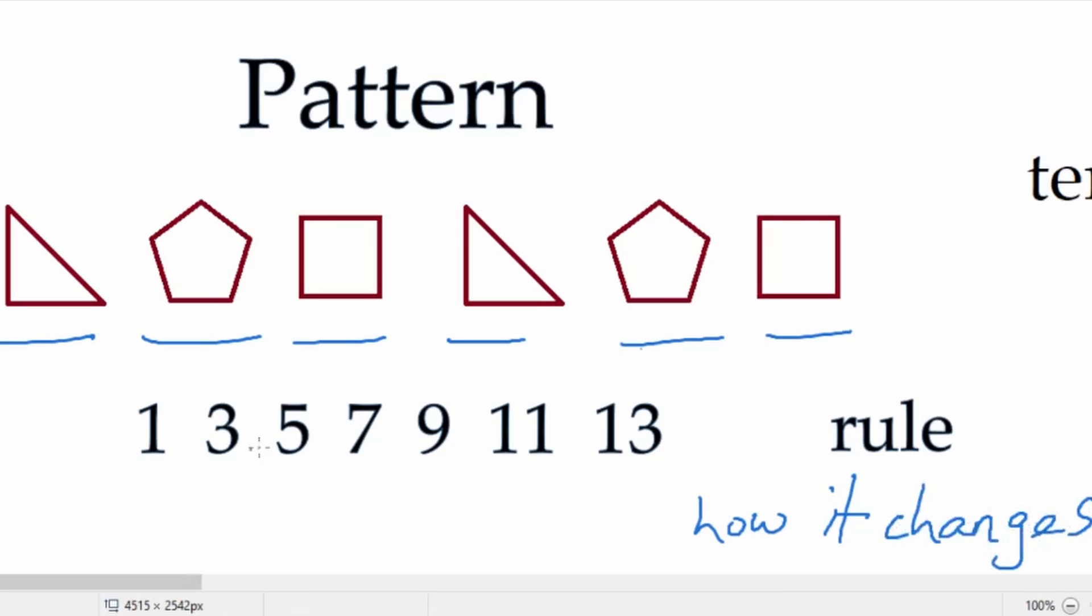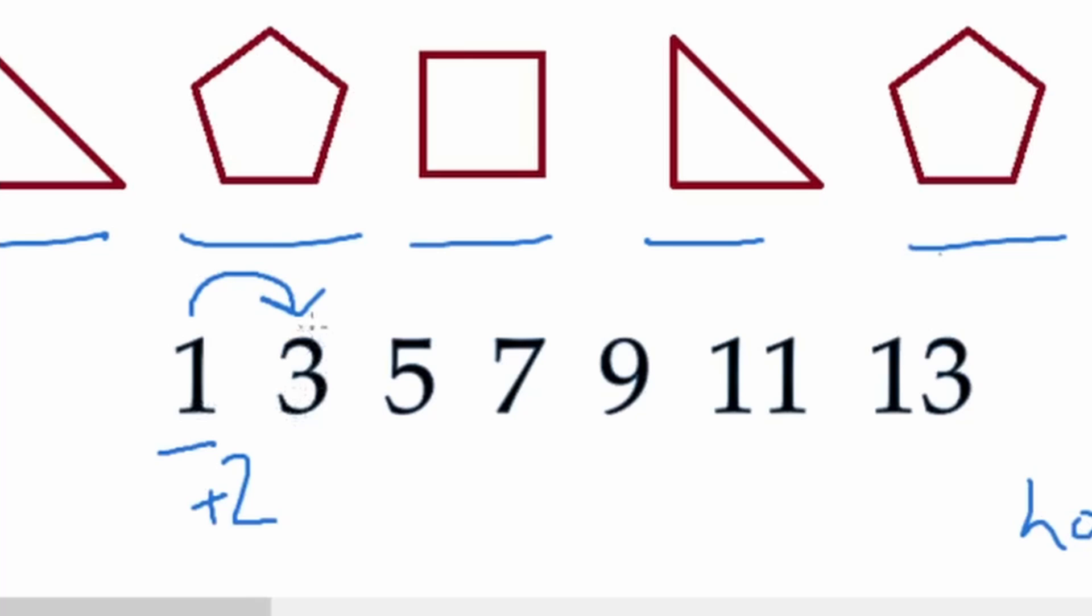So let's analyze this pattern right here. One, three, five, seven. How is this pattern changing each time? If we start right here, what's the difference between one and three? Well, if I add two, I get to three. To figure out if that's our rule, let's repeat it.